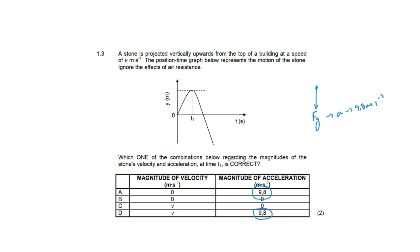At time t₁, the displacement is at its maximum positive value, meaning the stone is at maximum height. At maximum height, velocity transitions from positive to negative and is instantaneously zero. Therefore the correct answer is option A: the acceleration of a projectile is always 9.8 m/s² downward, and at maximum height the velocity is instantaneously zero.